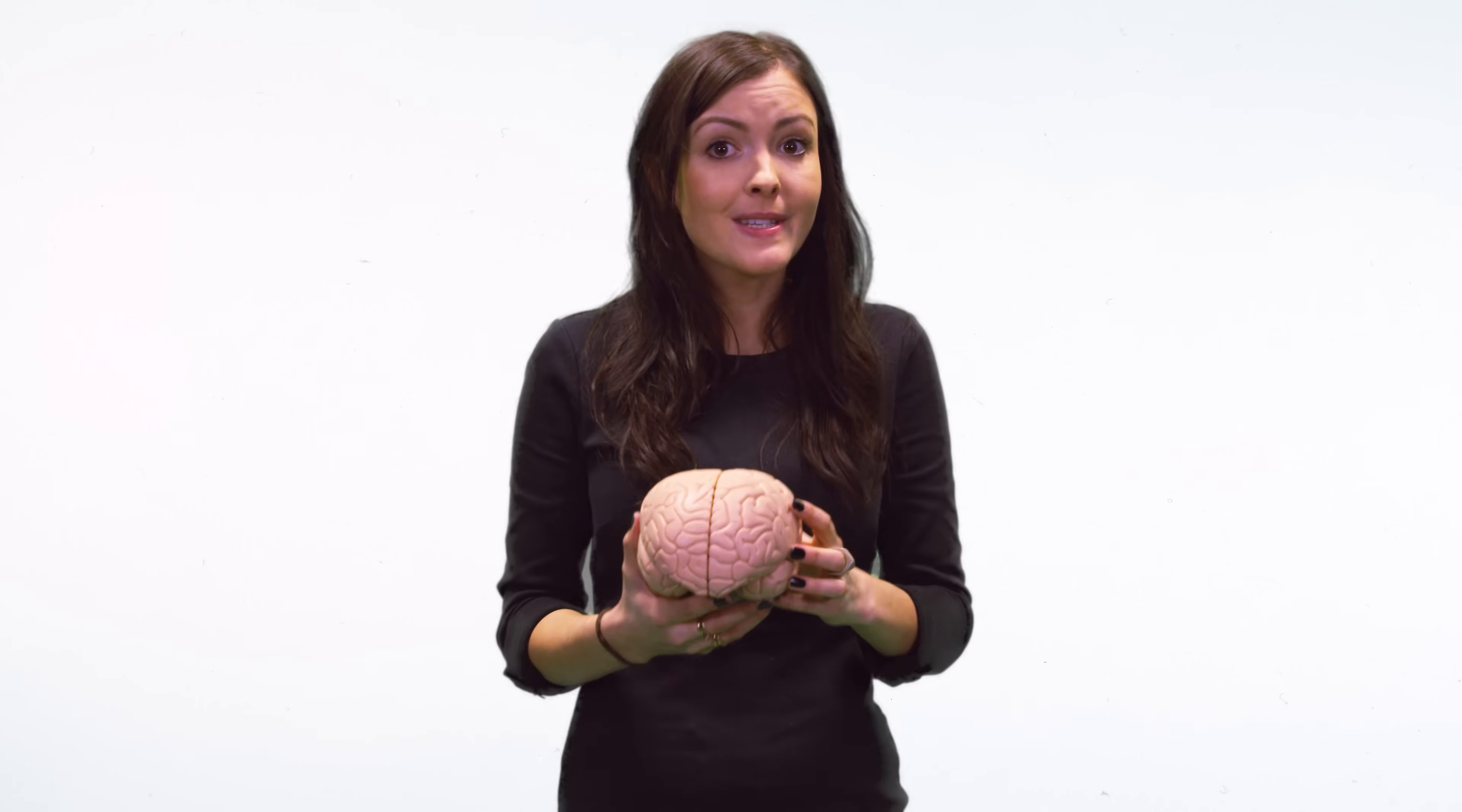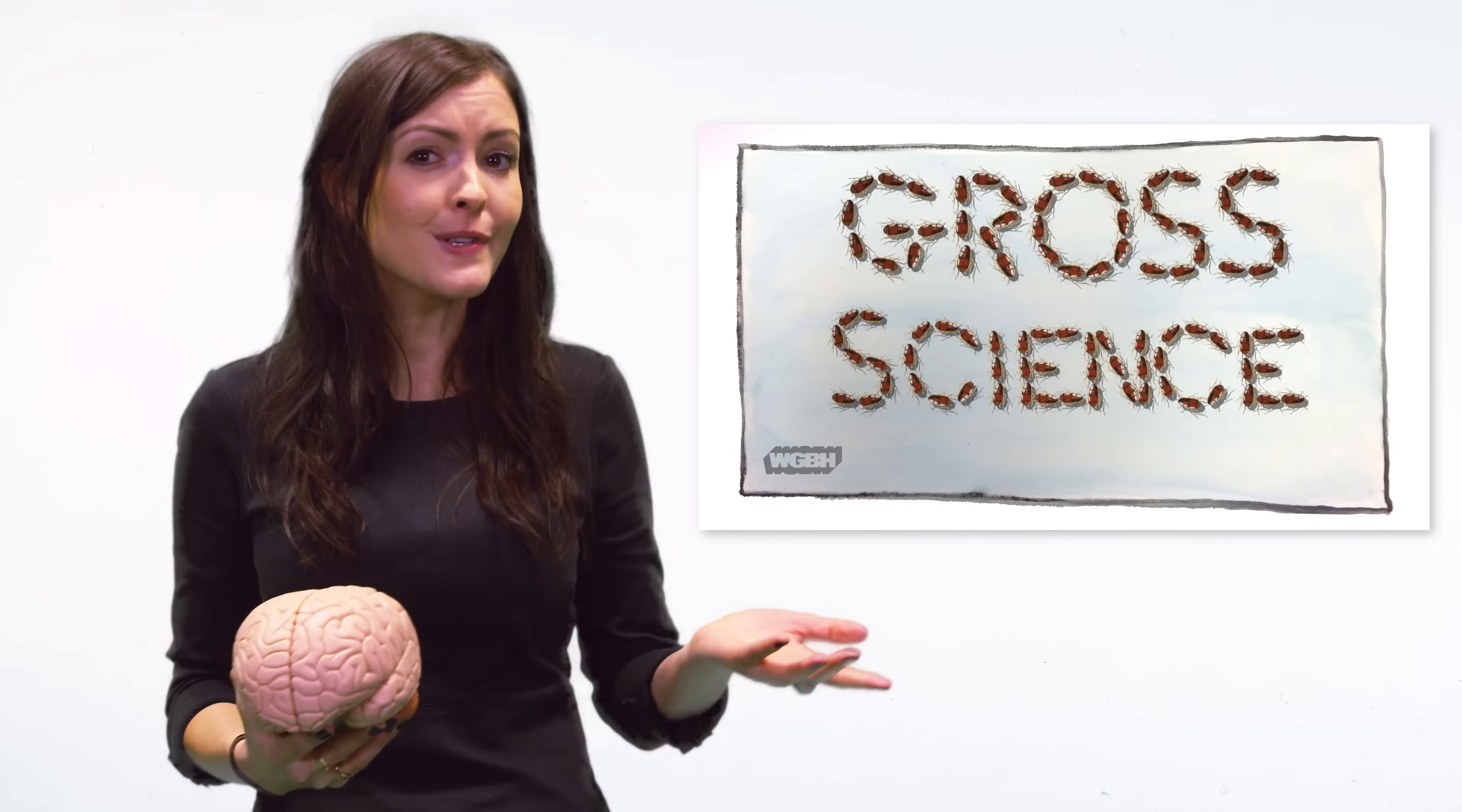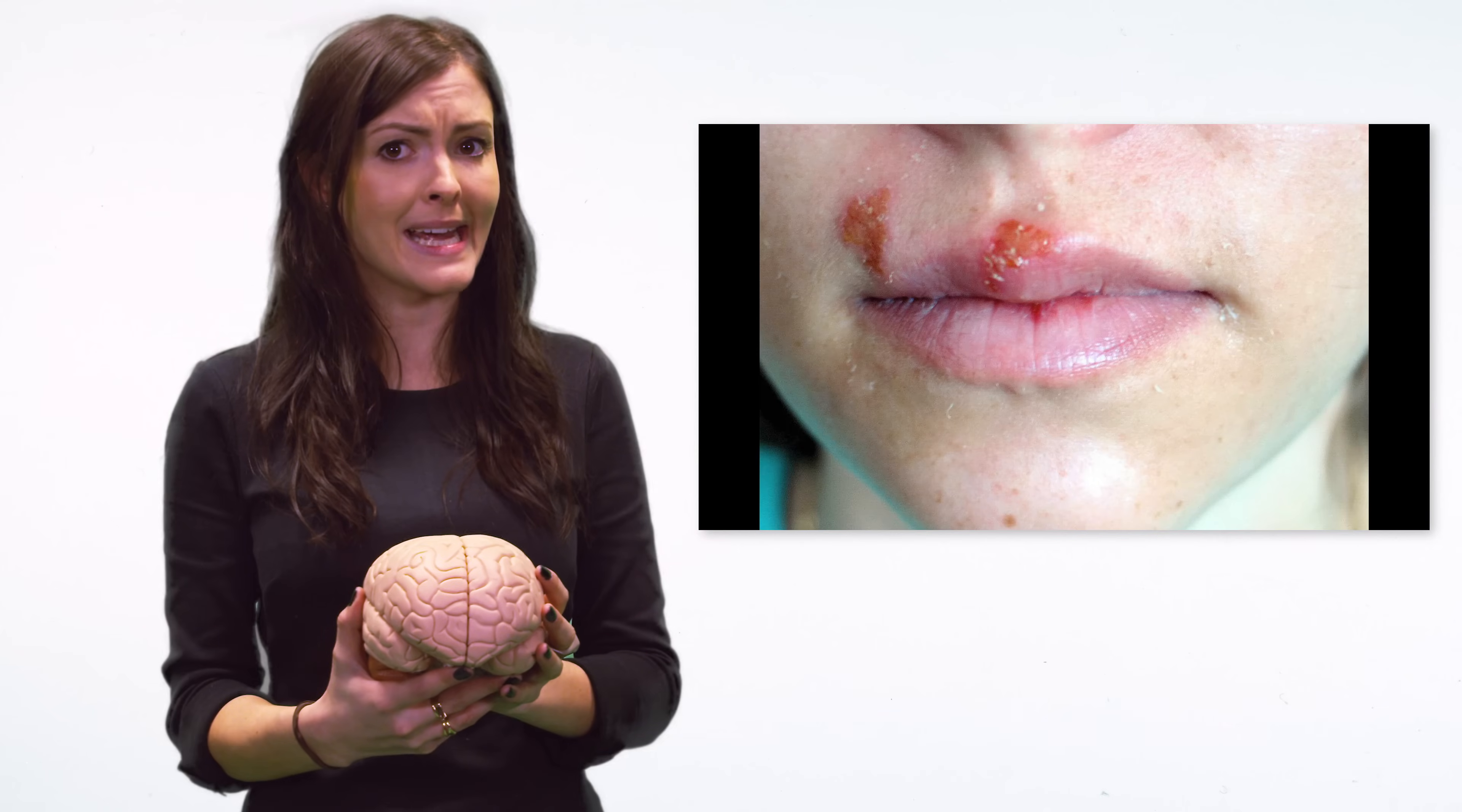But brain injuries don't just come from trauma. They can come from diseases, too. Check out Gross Science, where Anna explains how the herpes virus hides in your neurons and what happens next. And if you don't already, subscribe to BrainCraft. I have a new brainy episode that's not entirely gross every Thursday.